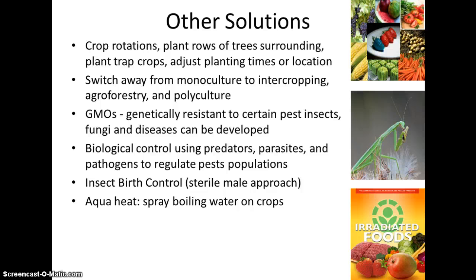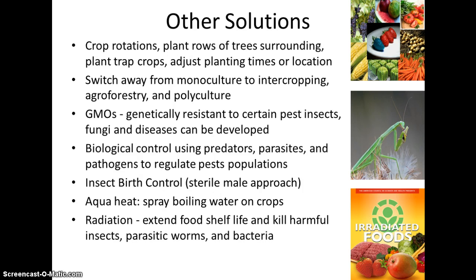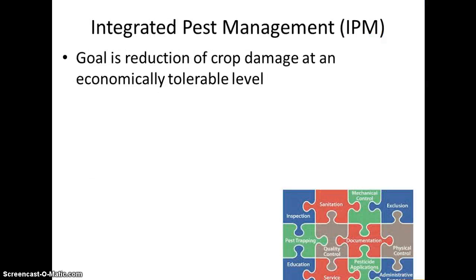Aqua heat — spraying boiling water on crops — does not kill the crops but does kill insects. Irradiating the foods themselves kills insects, worms, and bacteria, giving them a much longer shelf life. However, it also kills the beneficial bacteria in these foods as well.